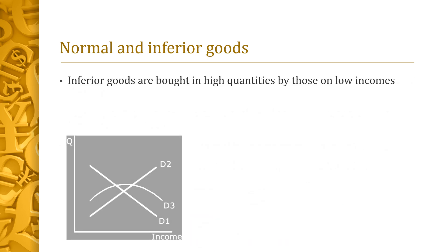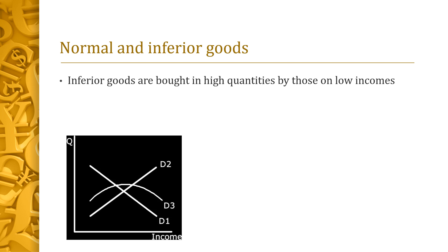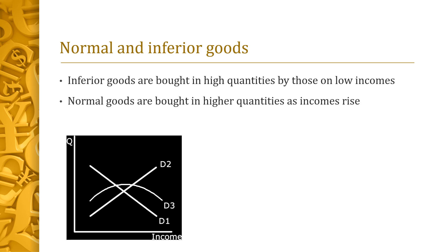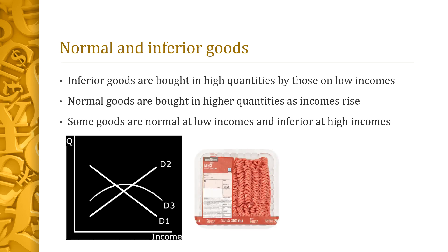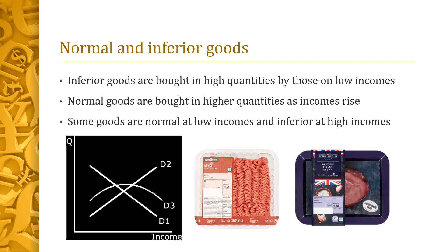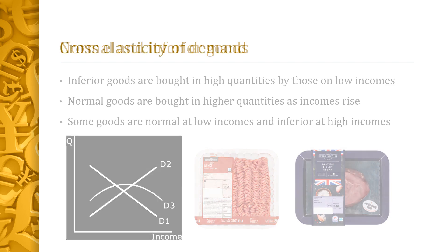Inferior goods are bought in high quantities by those on low incomes, then bought less and less as incomes increase, as illustrated in our quantity-income graph by demand curve D1. Normal goods are bought in higher quantities as incomes rise, as shown by demand curve D2. Some goods are normal at low incomes and inferior at high incomes — minced beef, for example, may be bought in higher quantities as incomes begin to rise, but as incomes reach a certain point this product may be swapped out for a higher quality product such as steak.